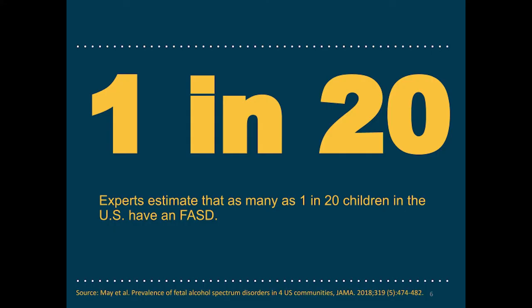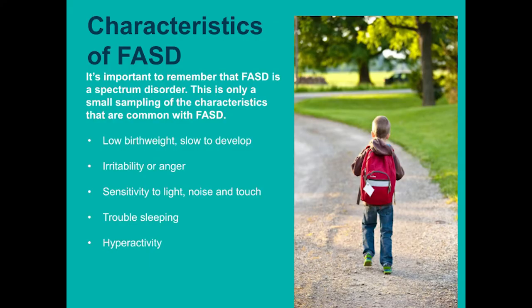Despite all of the research that says alcohol is dangerous during pregnancy, it's very common in our community still. Overall, it's estimated that up to 1 in 20 children in the United States have a FASD. This makes FASD more prevalent than spina bifida, Down syndrome, and autism. It's important to remember that it's a spectrum disorder, which means that each case is unique, and not everyone with a FASD has the same characteristics.